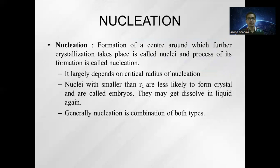Nucleation is the formation of a center around which further crystallization takes place, called a nucleus, and the process of its formation is called nucleation. It largely depends on the critical radius of nucleation. Nuclei smaller than the critical radius rc are less likely to form a crystal and are called embryos; they may dissolve back into the liquid. Generally, nucleation is a combination of two types.